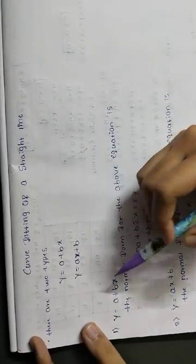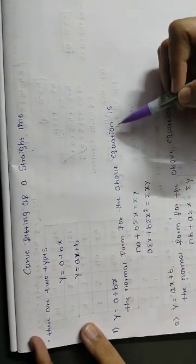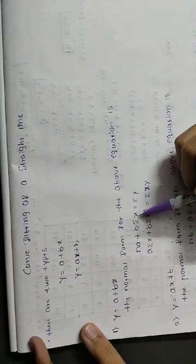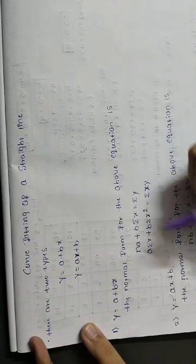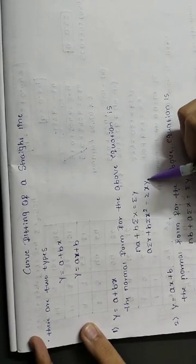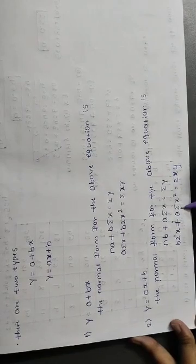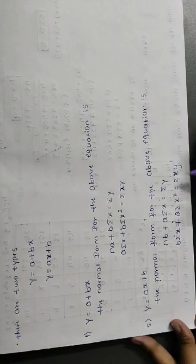Consider the first equation y = a + bx. The normal form for this equation is: na + b·(Σx) = Σy, and a·(Σx) + b·(Σx²) = Σxy. For the second equation y = ax + b, the normal form is: nb + a·(Σx) = Σy, and b·(Σx) + a·(Σx²) = Σxy.